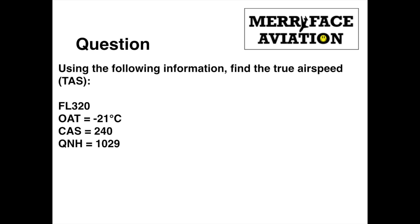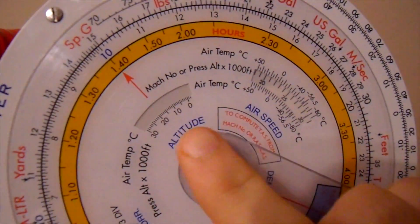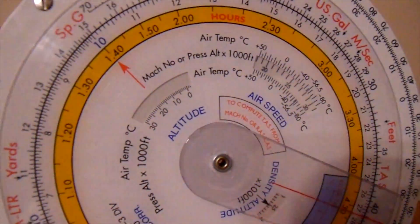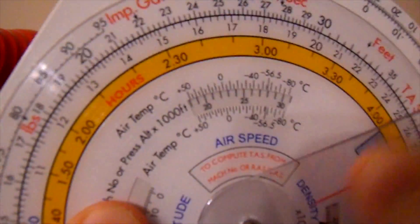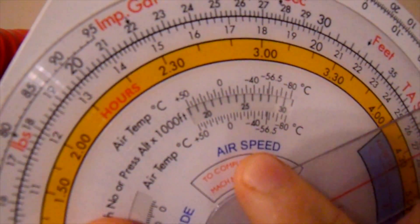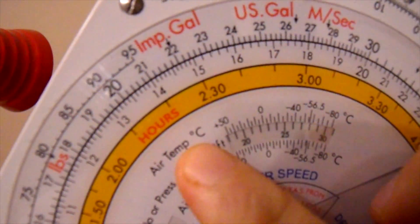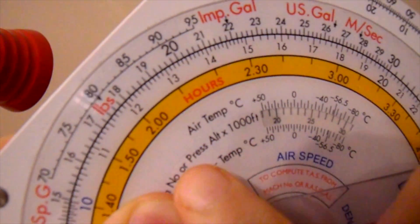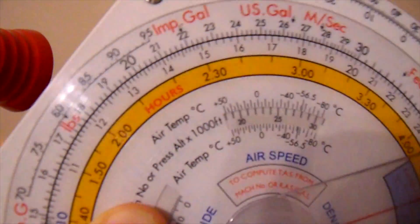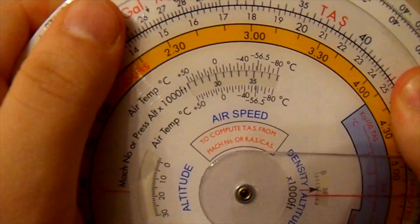Right, let's get our handy CRP out. The first thing to do is to identify the correct parts of the flight computer that we are going to use. Look at the two windows near the centre of the wheel — there is an altitude window and an airspeed window. Unsurprisingly, we will be using the airspeed window. The fixed scales on the top and bottom edges of the window are temperature, denoted on the right hand side with a degree Celsius. The numbers behind the window represent pressure altitudes in thousands of feet. Therefore, we line up the given temperature and pressure altitude — in this case, we line up minus 21 with 32.